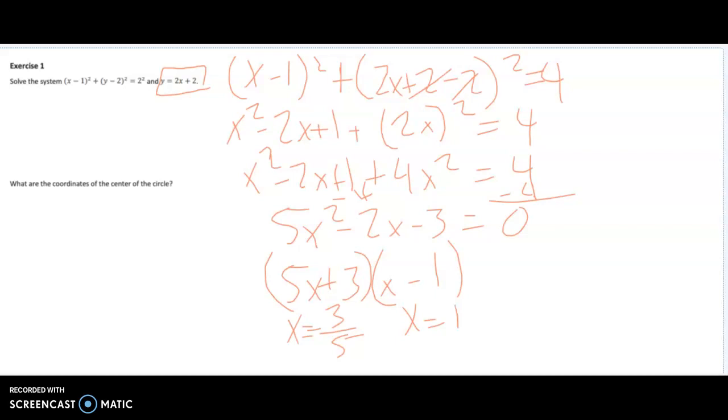So now, all you have to do to find your coordinates are to plug this back in. So I'm going to plug that into the line. y equals 2 times 1 plus 2. So 2 plus 2 is 4. So that would be (1, 4). Now if I plug in negative 3 fifths, that's 2 times negative 3 fifths plus 2. So that's going to be negative 6 fifths. Plus 2 would be 10, so that's 4 fifths. So negative 3 fifths and 4 fifths. There's your two points.